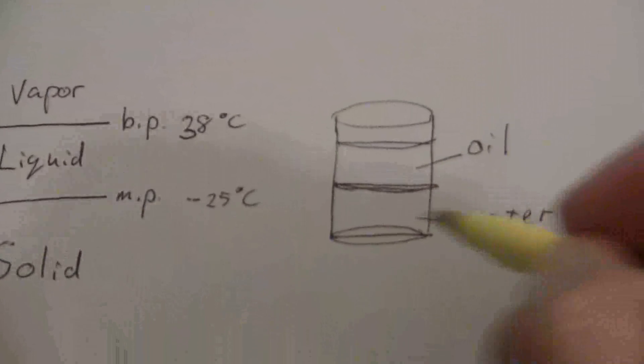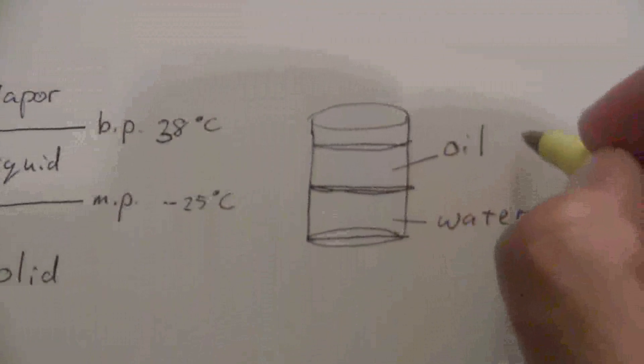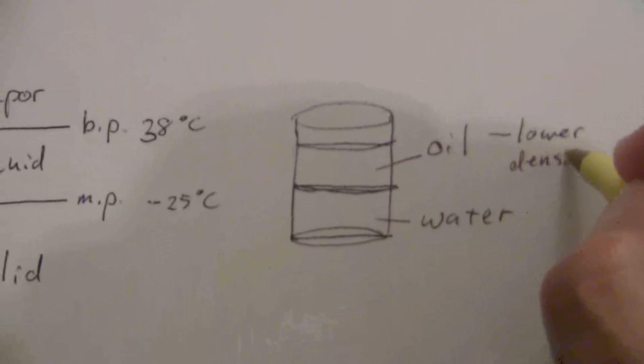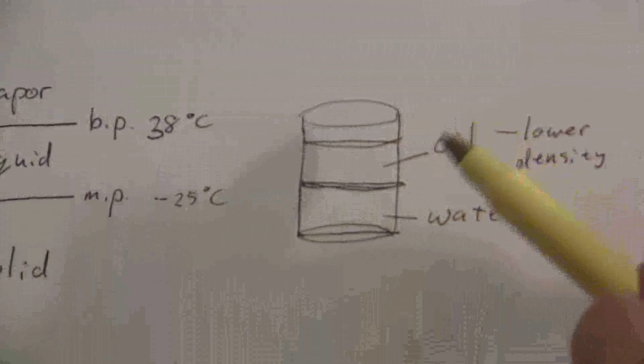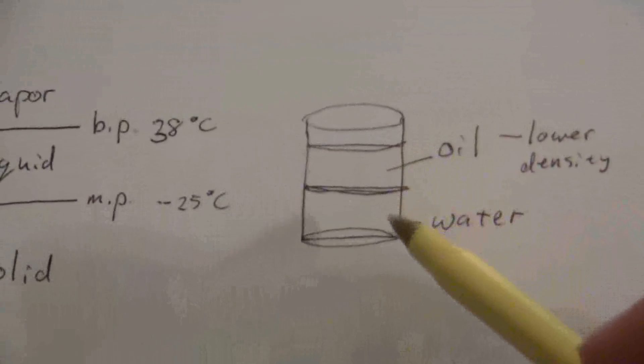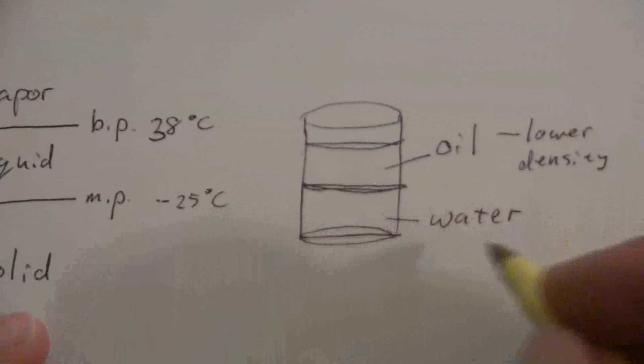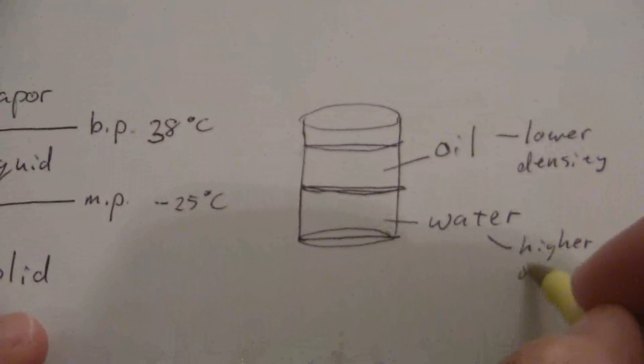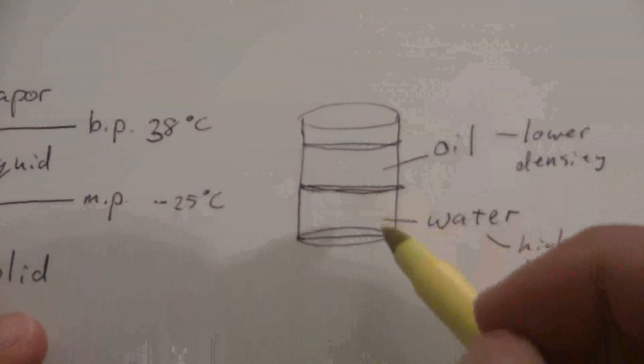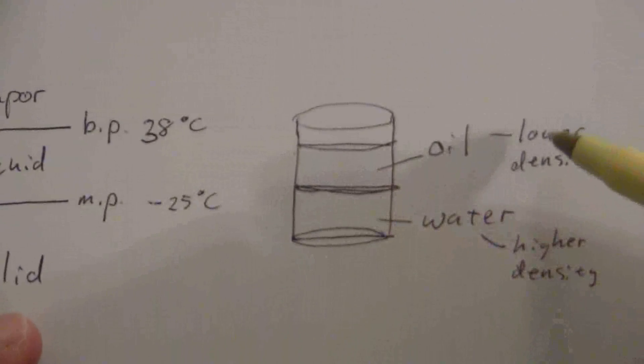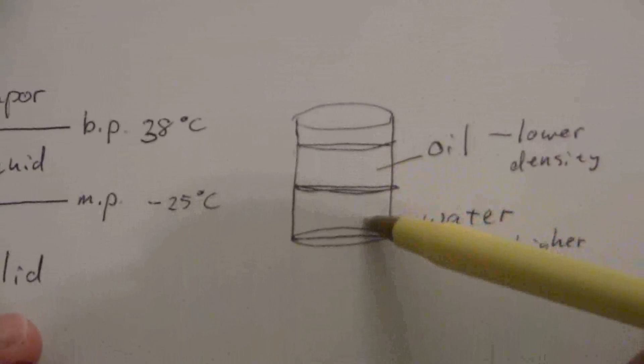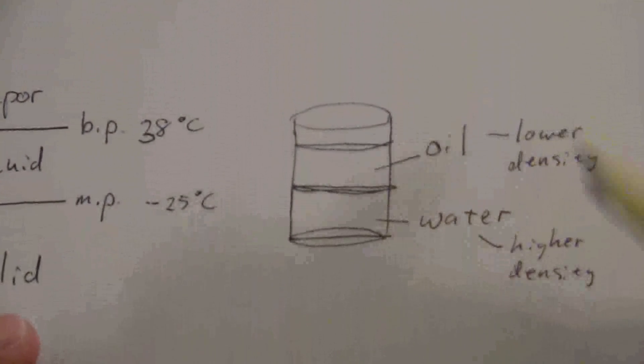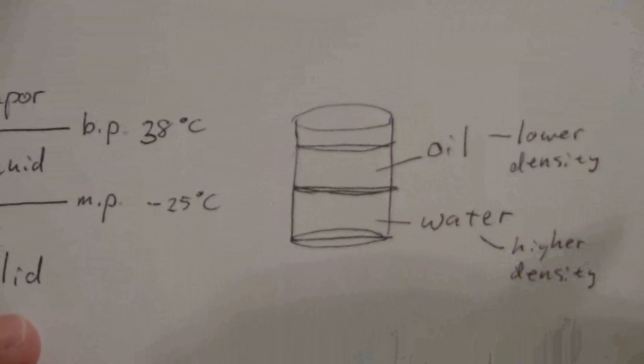Now, why is the water below the oil? It's because the oil has a lower density. The lower density, that means it has less weight for its mass. And so it floats on top of the higher density, the one that has more mass in the same volume. So this correlation will let you know which layer to expect on the top. If you know their densities, the one with the lower density will be above the layer with the higher density.